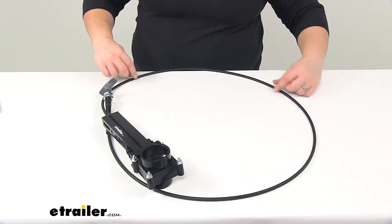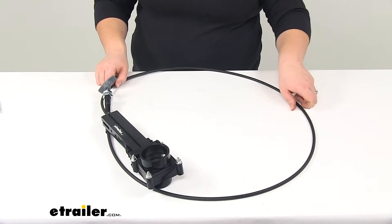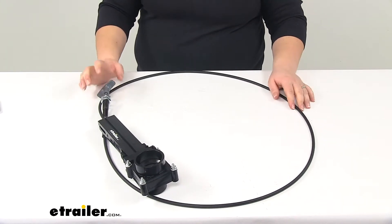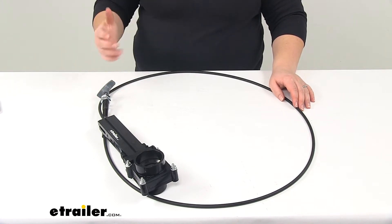You'll also want to anchor it in a couple of locations. So grabbing some loom clamps wouldn't be a bad idea. We do have a couple of options here at eTrailer.com. Loom clamps, zip ties, any of those things will help you get that anchored down.